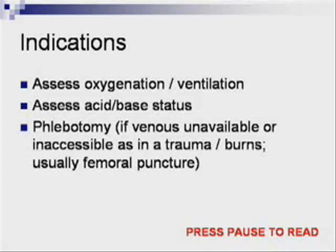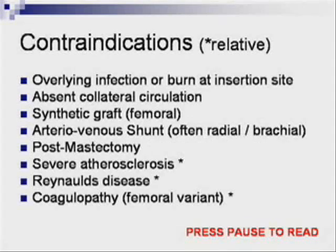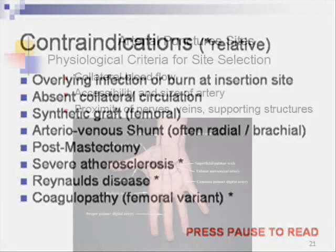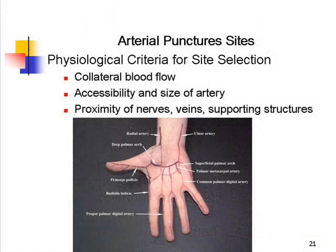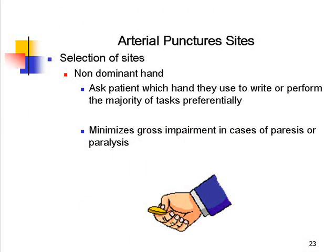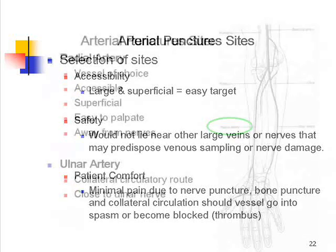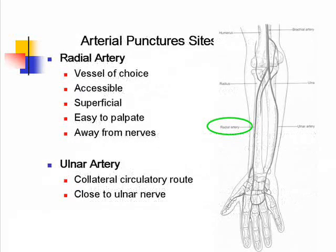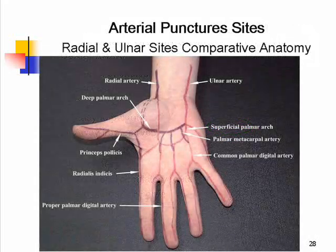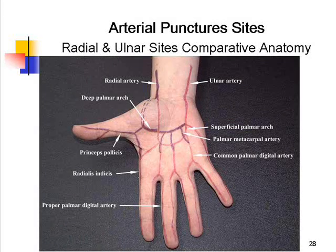The student is encouraged to review the indications, contraindications, and the physiological criteria for site selection. The selection of the site with preference for the non-dominant hand, accessibility, safety, and patient comfort are all important. The rationale for the radial artery puncture should be included, including the blood supply to the hand and the collateral circulatory route.